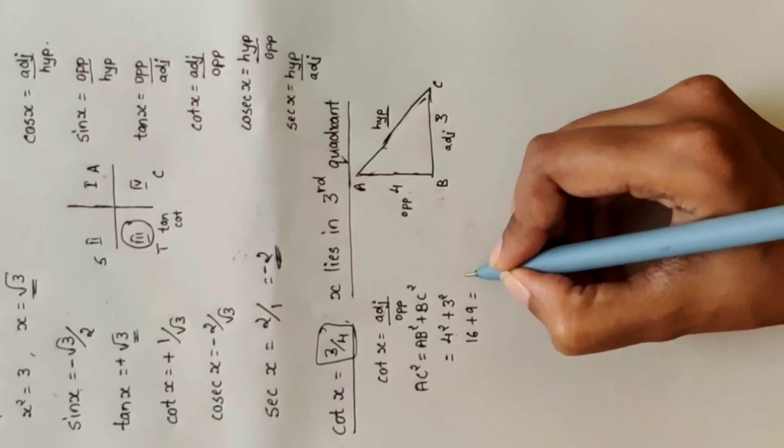Sin x = opposite divided by hypotenuse = 12 divided by 13.